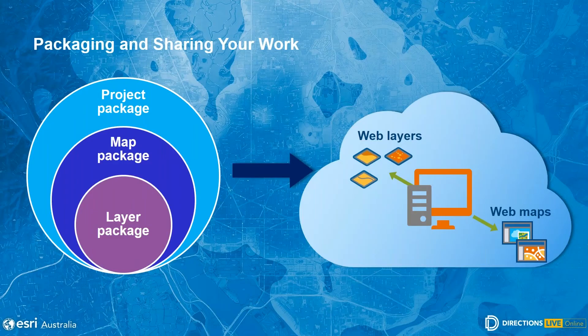ArcGIS Pro offers several ways to share your maps, data, and analysis results either digitally or in print. The most traditional way is as printed maps — in ArcGIS Pro you can create layouts for export to a PDF file, or create packages to share layers, maps, and entire projects digitally. Pro also allows you to share the map directly to the web as a web map or layer, taking advantage of your web GIS enabled capability, whether you want to share to your organization's ArcGIS Online or to your enterprise portal.